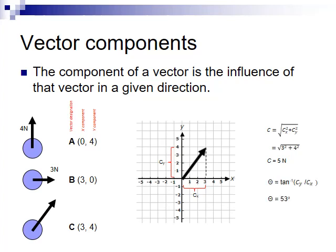And finally, we can calculate its direction using the inverse tangent function as you can see. At the end, we can represent vector C as 5 Newton at an angle of 53 degrees.